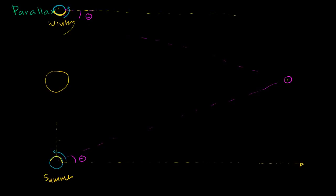In the last video, we talked about how parallax is the apparent change in position of something based on your line of sight. If you look outside of a car window while it's moving, you see that nearby objects seem to be moving faster than far away objects. We measured the apparent displacement of the star at different points in the year relative to straight up, but you could also measure it relative to things in the night sky that don't appear to be moving — because they're way, way farther away, like other galaxies or clusters of galaxies.